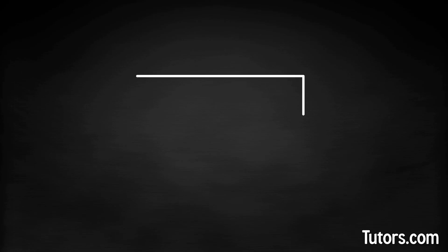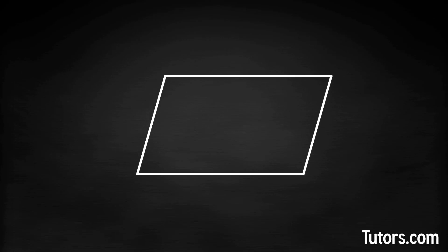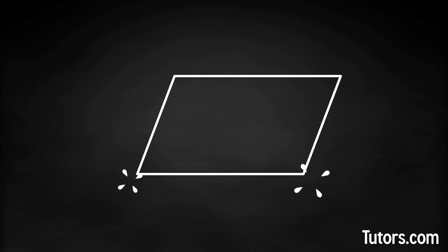If only one set of opposite sides are congruent, you have a trapezoid. Now let's make a parallelogram. Take a rectangle and push either its left or right side so it leans over — you have a parallelogram.